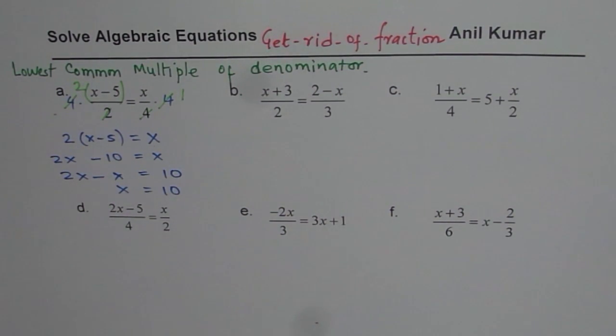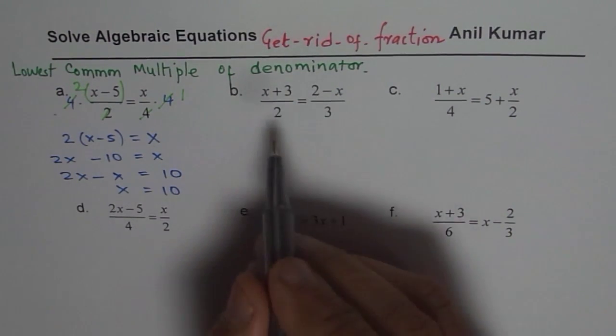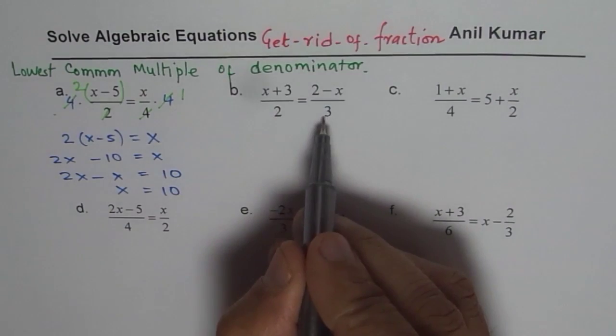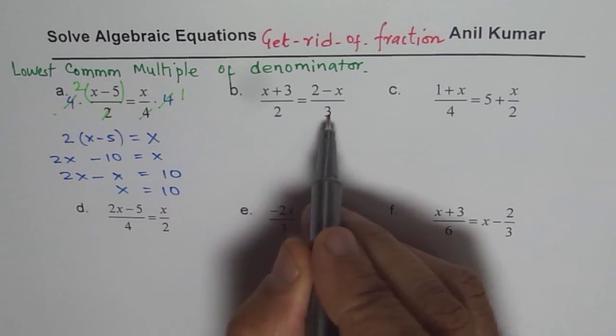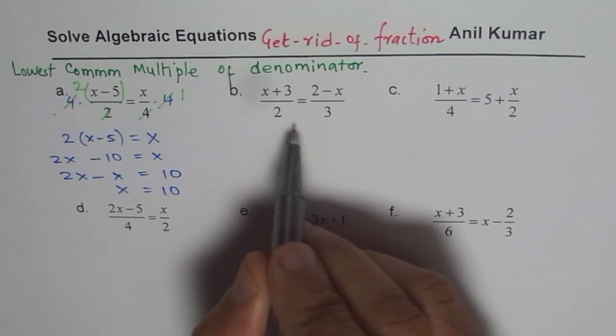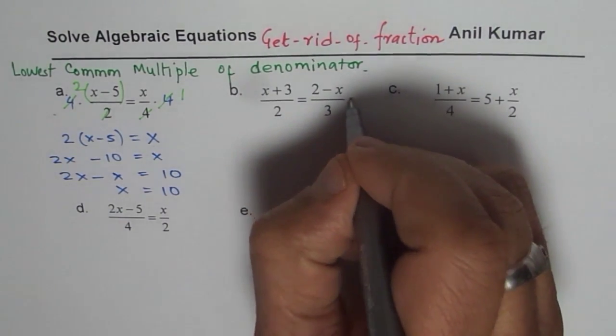Let's follow the same strategy in the next one. Now tell me. What is the lowest common multiple here? Both are prime numbers. So the lowest common multiple will be 2 times 3 is 6. Right? So just multiply by 6 on both sides.